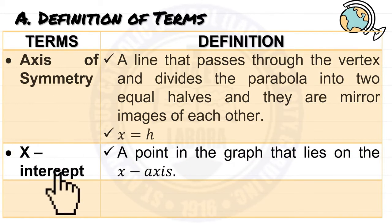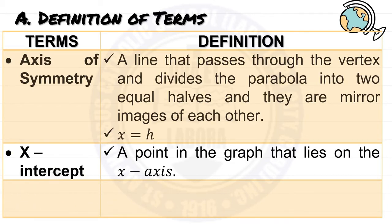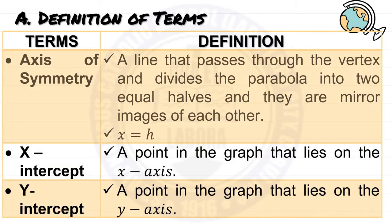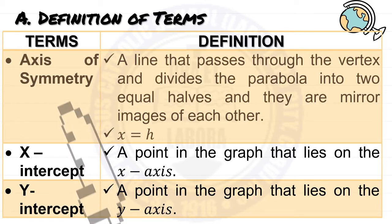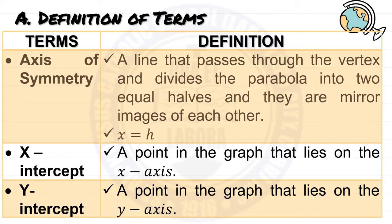Next is the x-intercept. The x-intercept is a point on the graph that lies on the x-axis. The y-intercept is also a point on the graph, but this time it lies on the y-axis. In summary: x-intercept — point on the x-axis; y-intercept — point on the y-axis.